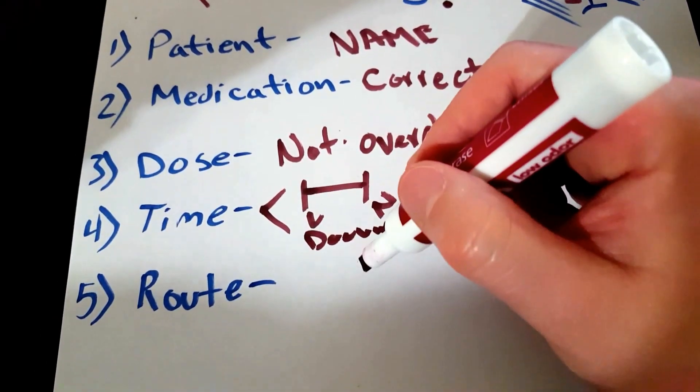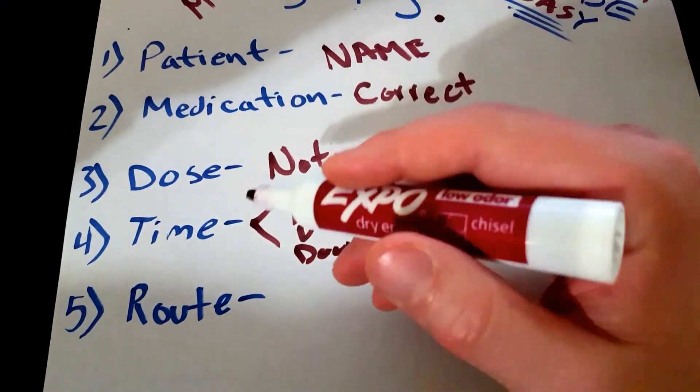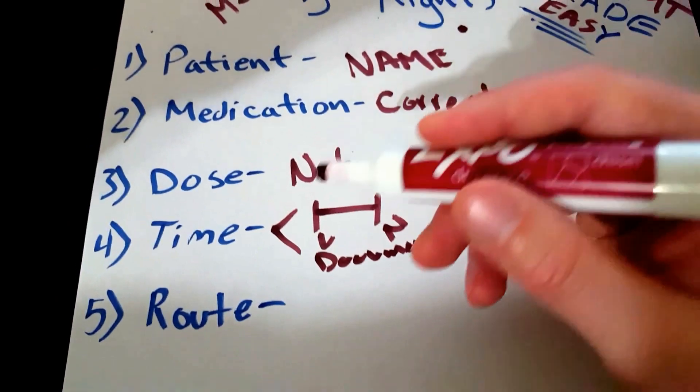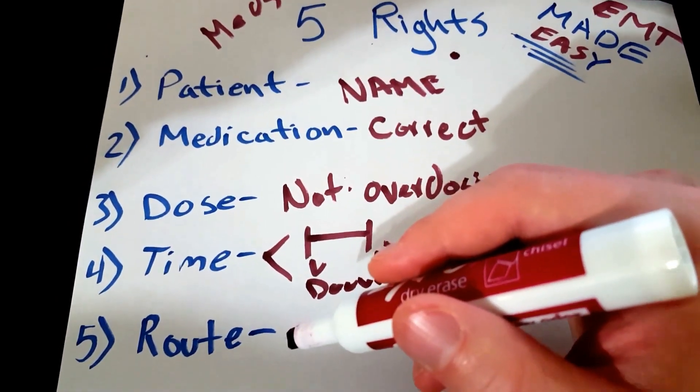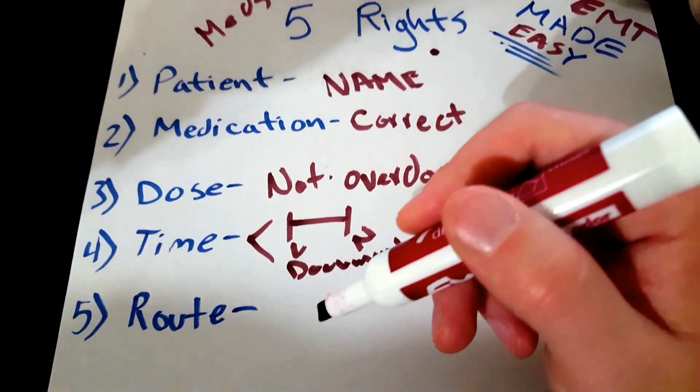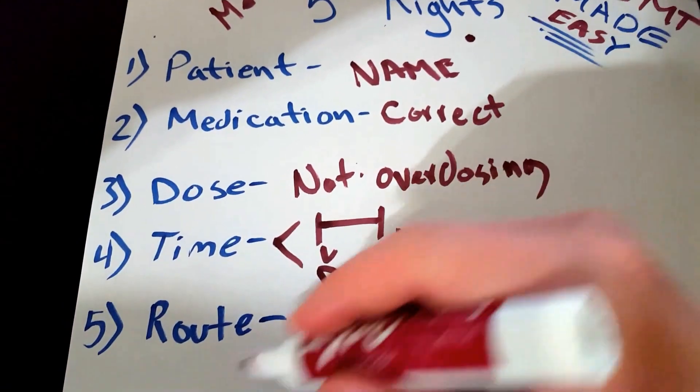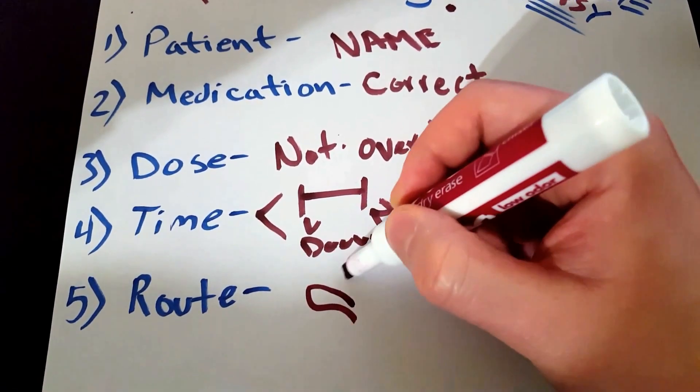And then the route. So medications are given orally, meaning that they can swallow the medication, the fluid, the pill. Or some are given sublingually, meaning that they're given under the tongue. Nitroglycerin is a good example of that—it's given under the tongue.